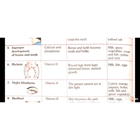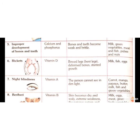Improper development of bones and teeth is caused due to deficiency of calcium and phosphorus. Calcium is very important for bones and teeth. Due to this deficiency, bones and teeth are not properly developed and become weak and brittle. Foods to give include milk, green vegetables, meat, fish, pulses, and nuts.